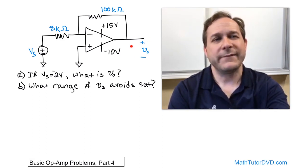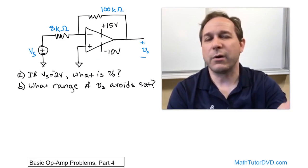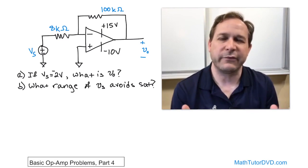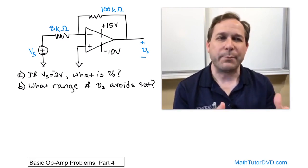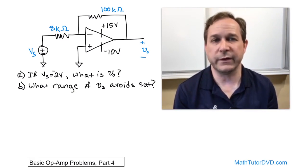That means we can drive this output all the way to plus 15 volts, but in the negative direction, we can only drive it to negative 10 volts. If we get past either of those boundaries, we've saturated. The output can only go to plus 15 or minus 10. It can't go any higher or lower than those numbers, basically.